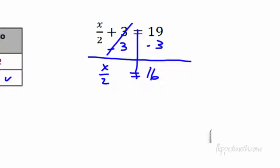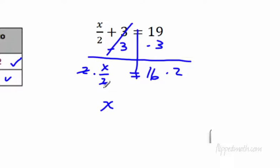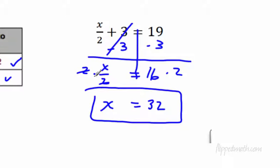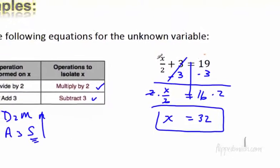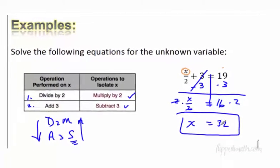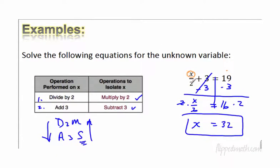That's the end of the first step. Second step: we need to undo the division. How do you undo dividing by 2? We multiply by 2 on both sides. The 2s cancel. Reading left to right, we get x coming down, the equal sign coming down, and 16 times 2 is 32. So x equals 32 — I'll box it. To check the answer, plug it back in: 32 divided by 2 is 16, plus 3 is 19. That works.